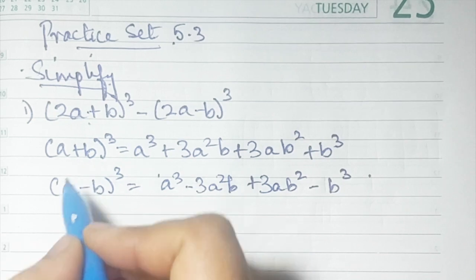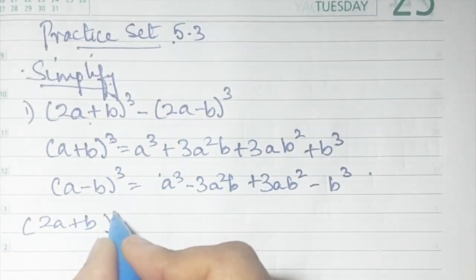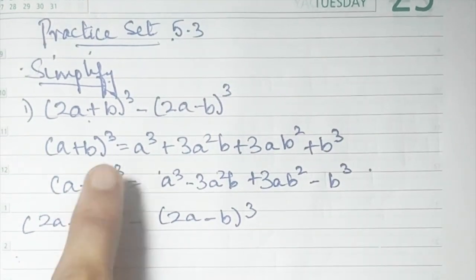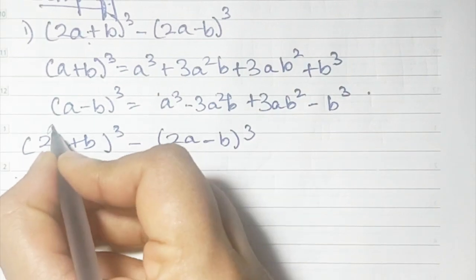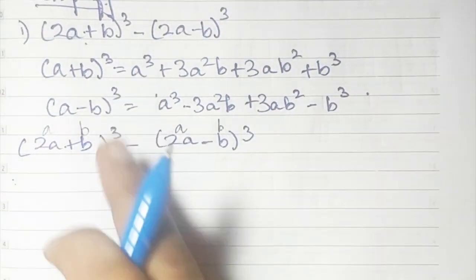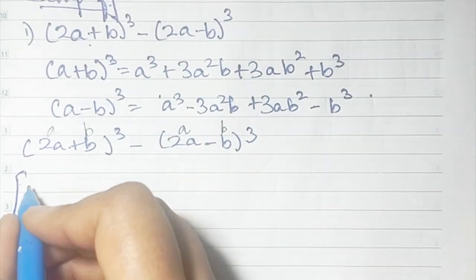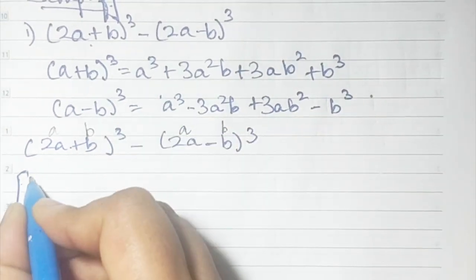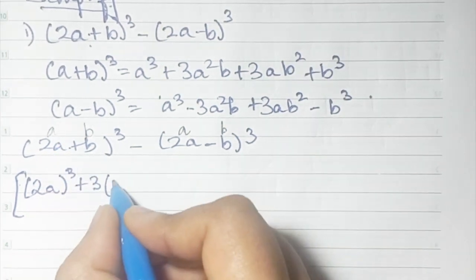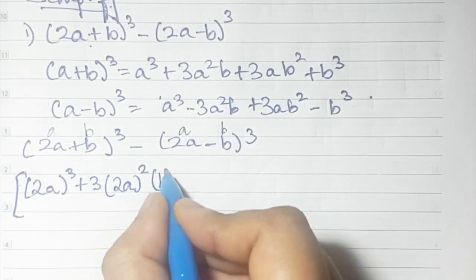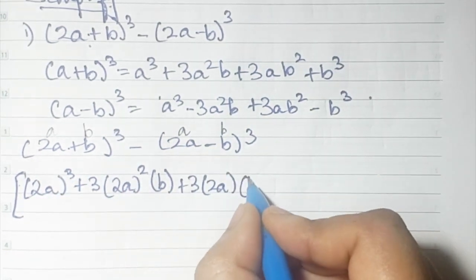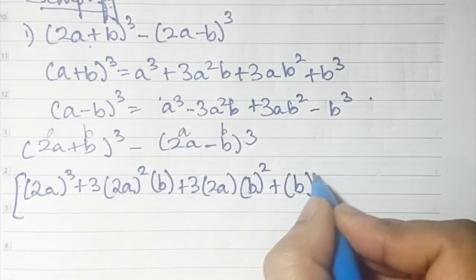Let's begin. The first one is the positive formula. Write the question down: (2a + b)³ minus (2a - b)³. We'll write the positive formula first, where a is 2a and b is b. So using the positive formula: (2a)³ + 3·(2a)²·b + 3·(2a)·b² + b³.